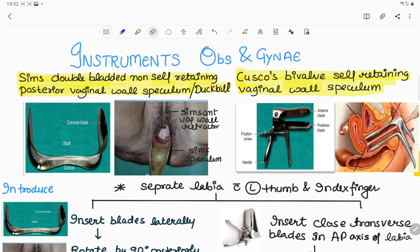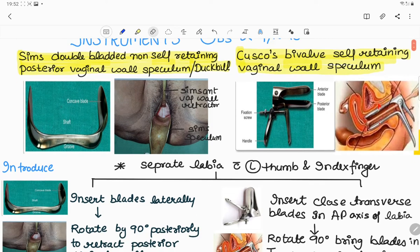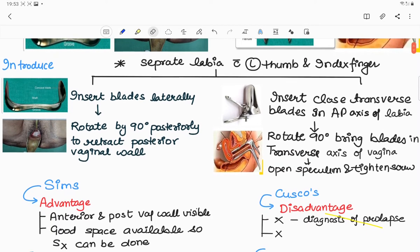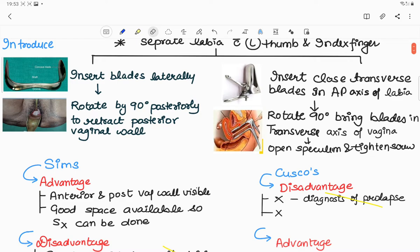On the other hand, there is another speculum called Cusco's bivalve self-retaining vaginal wall speculum. It consists of two anterior and posterior blades with one fixation screw and a handle. To introduce the Cusco's speculum, first we separate the labia, then insert the closed transverse blades in the anteroposterior axis. Then rotate it by 90 degrees to bring the blades in transverse axis of vagina and tighten the screw.